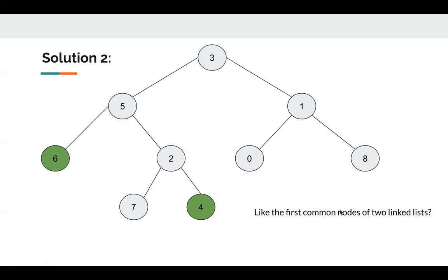Let's take a look at another solution. For this problem, it's very like we have two linked lists, and we need to find the first common node if they have intersections, right? So all these nodes, like 0, 1, 8, they are useless here. So in our mind, we don't need to think about them. So it's like we have two linked lists, and they intersect at 5, and we need to find this node 5.